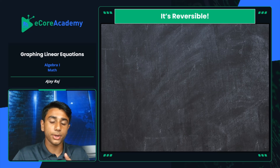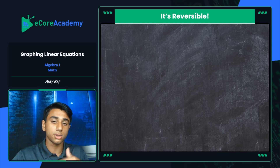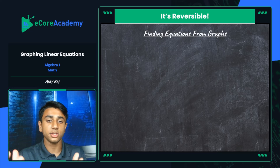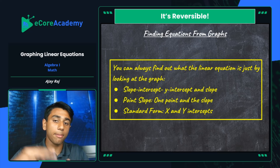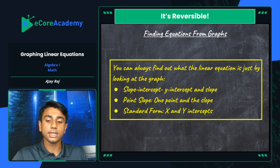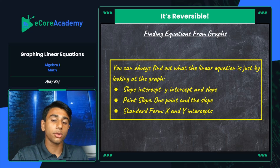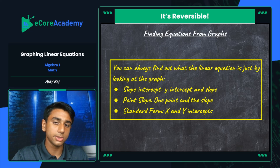Now that we've finished graphing all three forms, it's important to note that this process is reversible — you can also find equations from graphs. With access to any of a graph's points, at minimum two points, you can create an equation. For slope-intercept form, identify the y-intercept and use another point to calculate slope. For point-slope form, you just need one point and any other point to calculate slope. For standard form, you need the x and y intercepts.